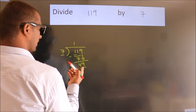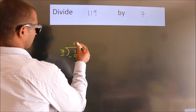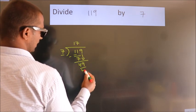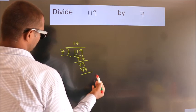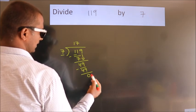When do we get 49? In 7 table. 7 7s 49. Now we subtract, we get 0.